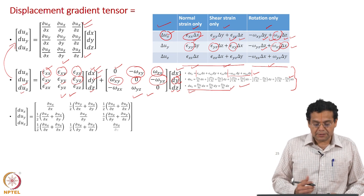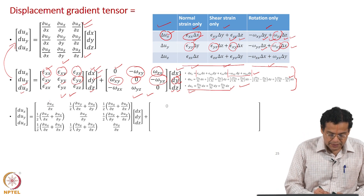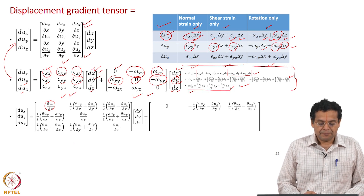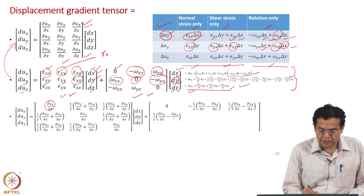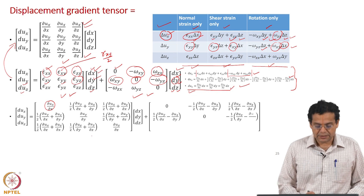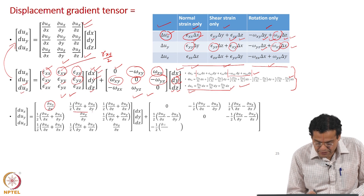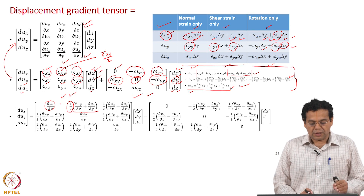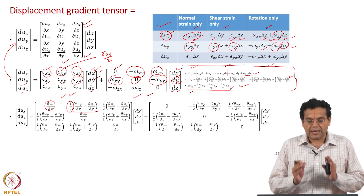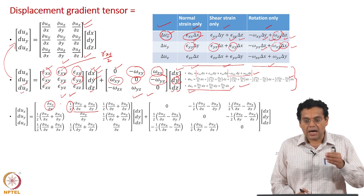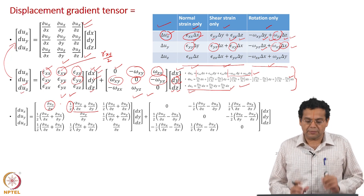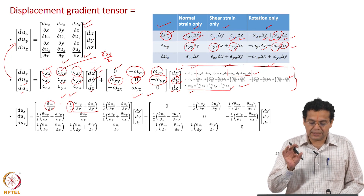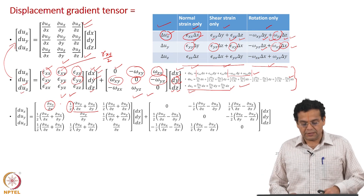We write in terms of displacement gradients: epsilon_xx is represented by ∂u_x/∂x. For epsilon_xy, we must be careful — epsilon_xy is gamma_xy divided by 2, where gamma_xy is the shear strain. So epsilon_xy is half of gamma_xy. Epsilon_xy is one component of this tensor, while gamma_xy is the actual shear strain — this component is half of the shear strain. This sometimes causes confusion, so to be clear: gamma_xy is the change in angle, and half of that is this component of the tensor.